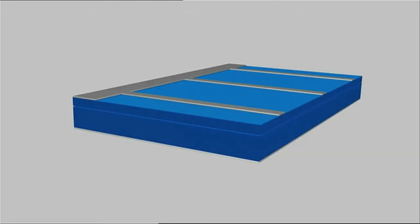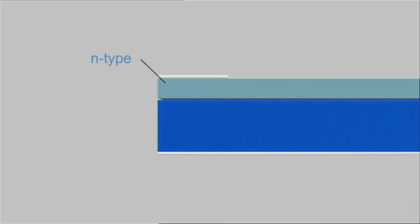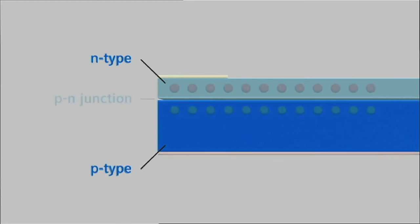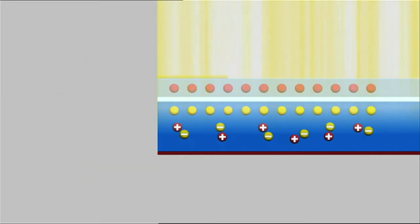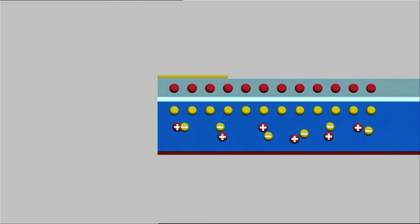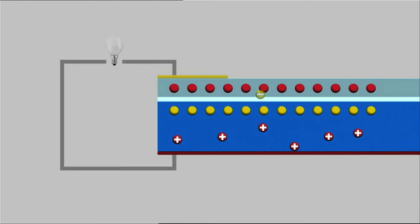The next step in solar cell production is diffusion. Here, a negatively charged phosphorus layer is added to each wafer's positively charged layer. In an oven heated to some 900 degrees centigrade, phosphorus atoms are injected with the help of nitrogen. The gaseous phosphorus-nitrogen mix is deposited on the wafer. At the interface between positive and negative charge layers, the free charge carriers created by the light are released. This generates an electric current.